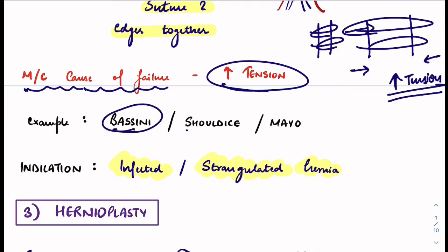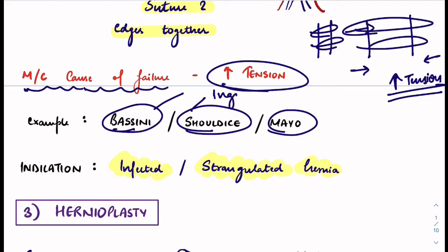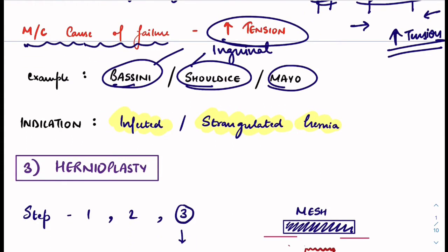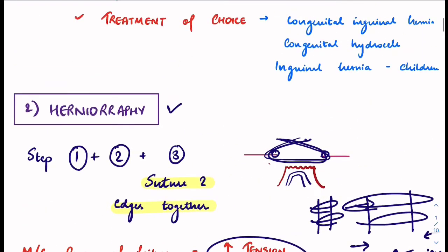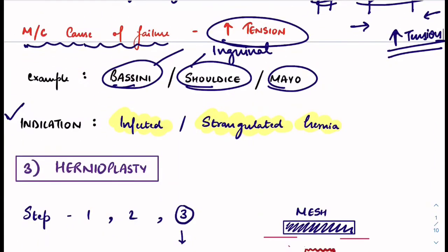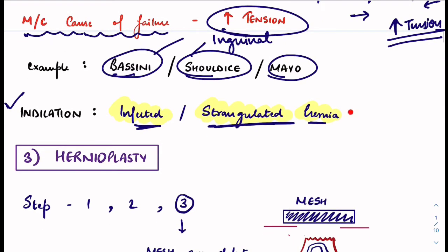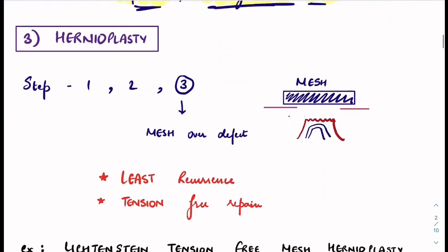Examples of herniorafi include Bassini's, Shouldice, and Mayo repairs. Bassini's and Shouldice are used in inguinal hernia. The indication for herniorafi is infected or strangulated hernia — if you have infected or strangulated hernia, you go for this method.